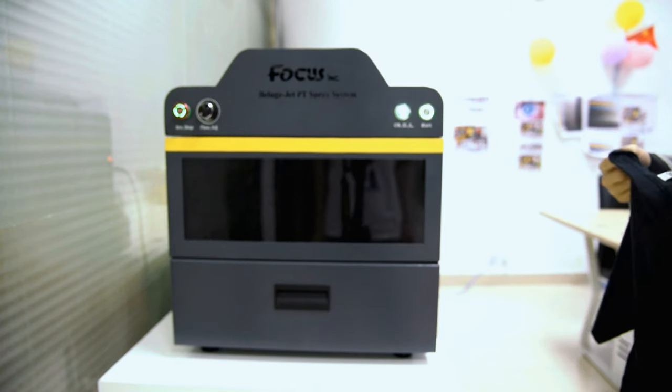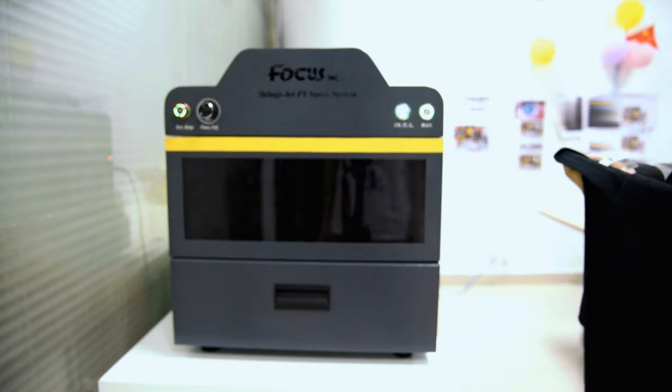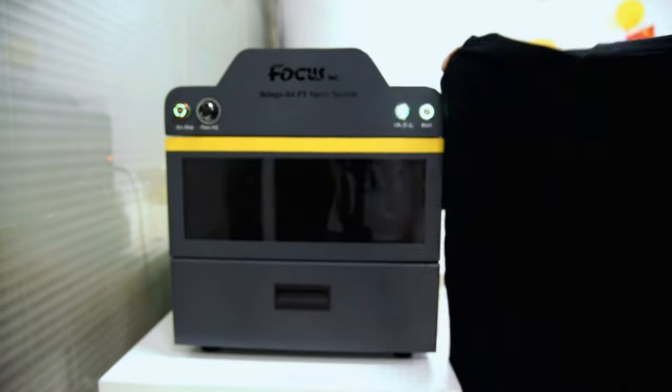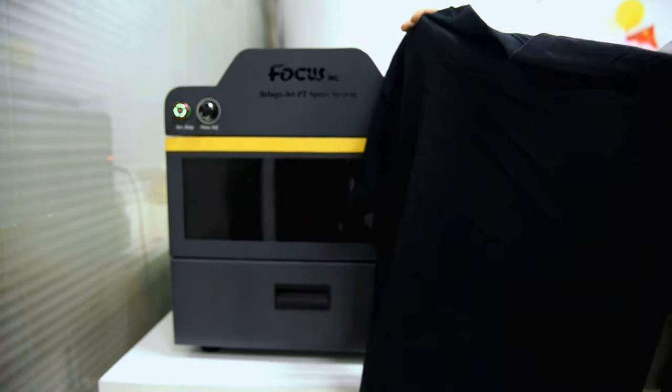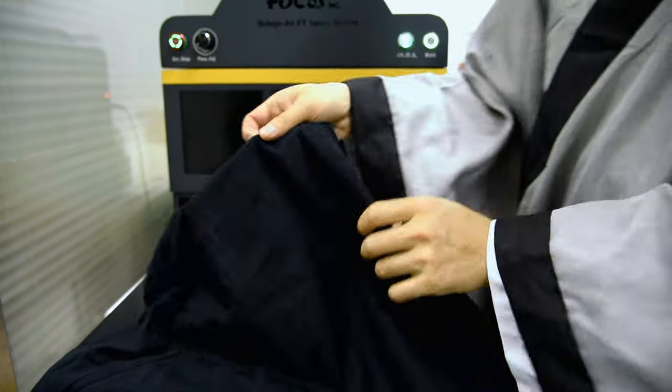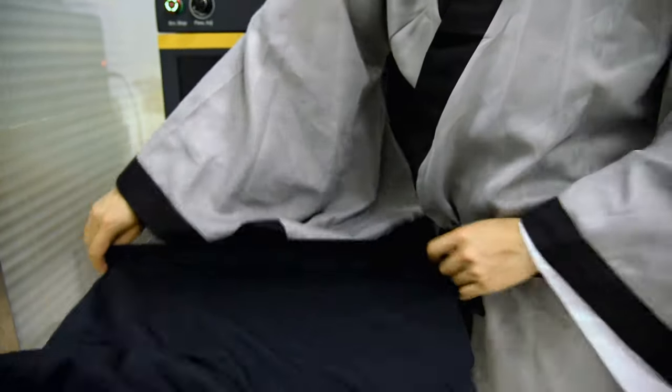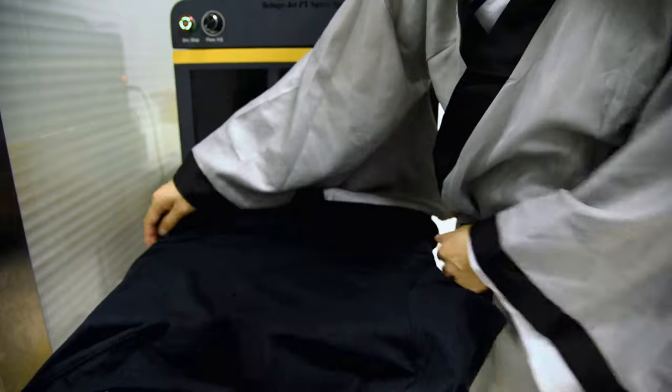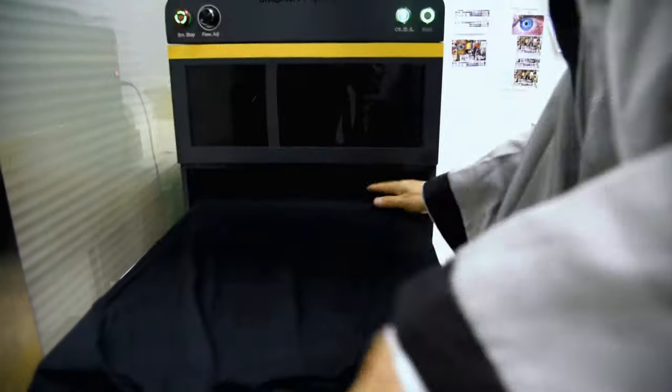Now MasterBee will introduce you how to do pretreatment with our Focus newest blue gadget pretreatment spray system. First we take a brand new blank t-shirt and we take out the tray. We lay the t-shirt on the top of the table. You can just put it on the top and make it flat.